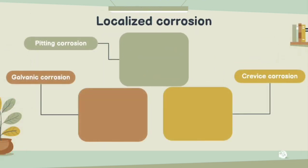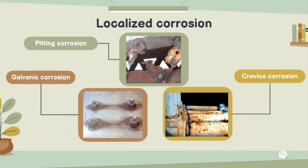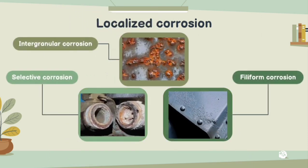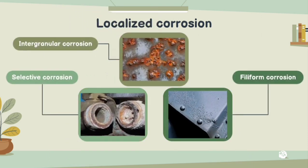Second is localized corrosion, in which part of the structure corrodes at a considerably higher than average rate. There are pitting corrosion, galvanic corrosion, crevice corrosion, intergranular corrosion, selective corrosion, and filiform corrosion.